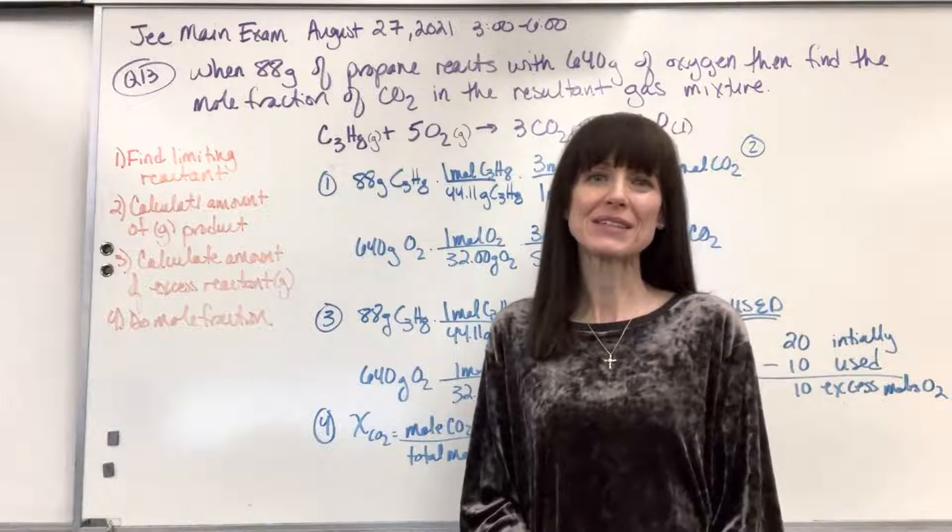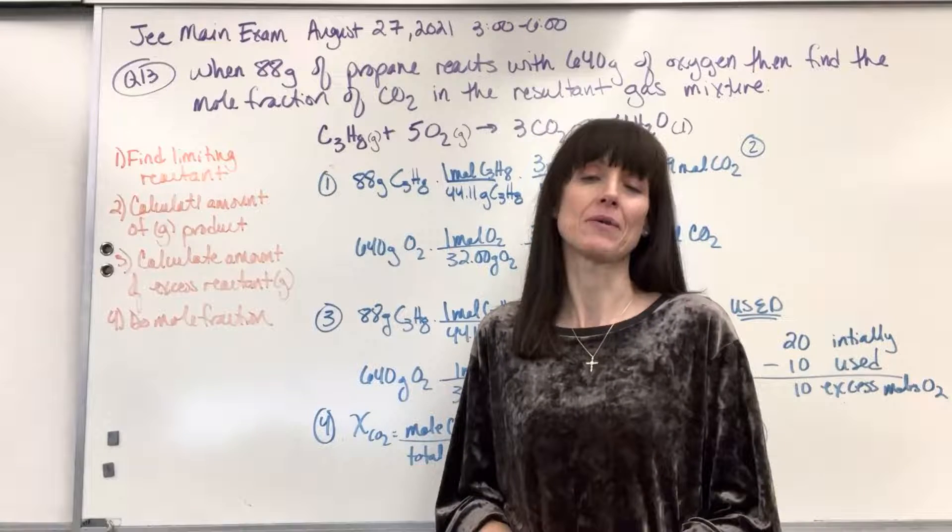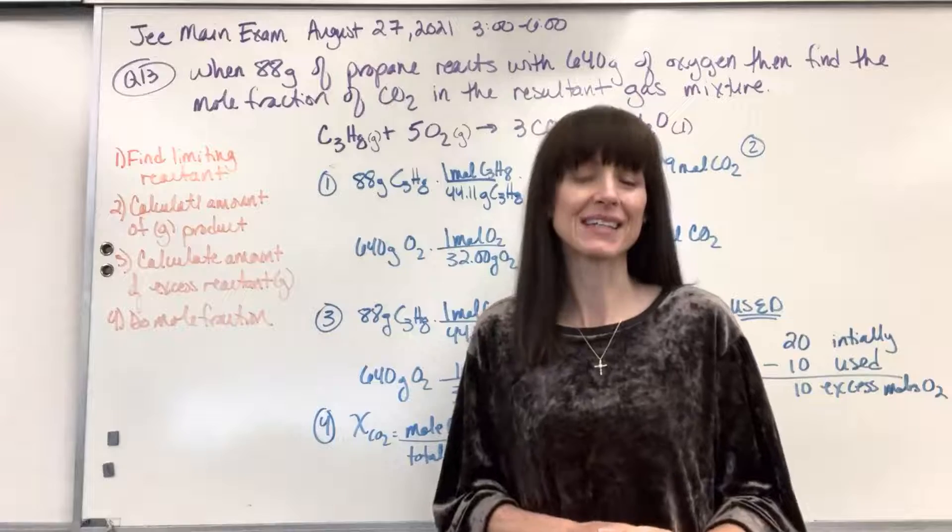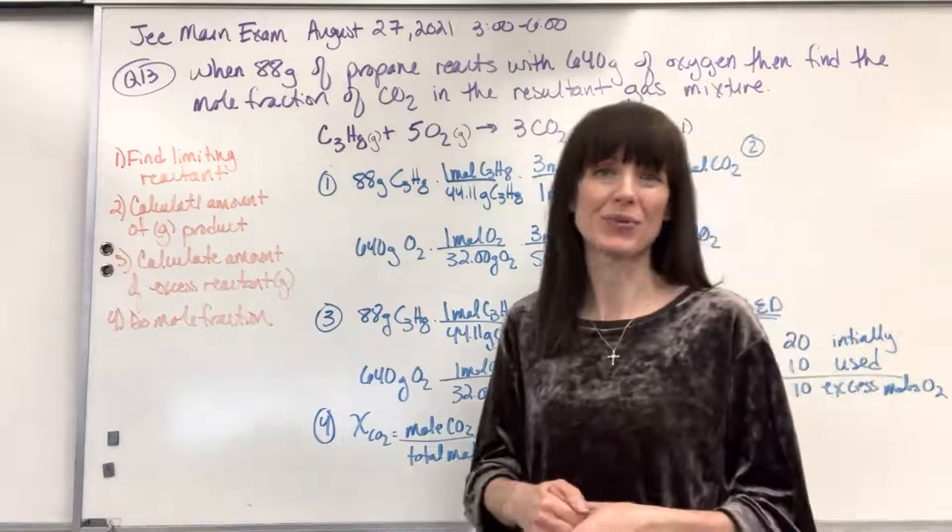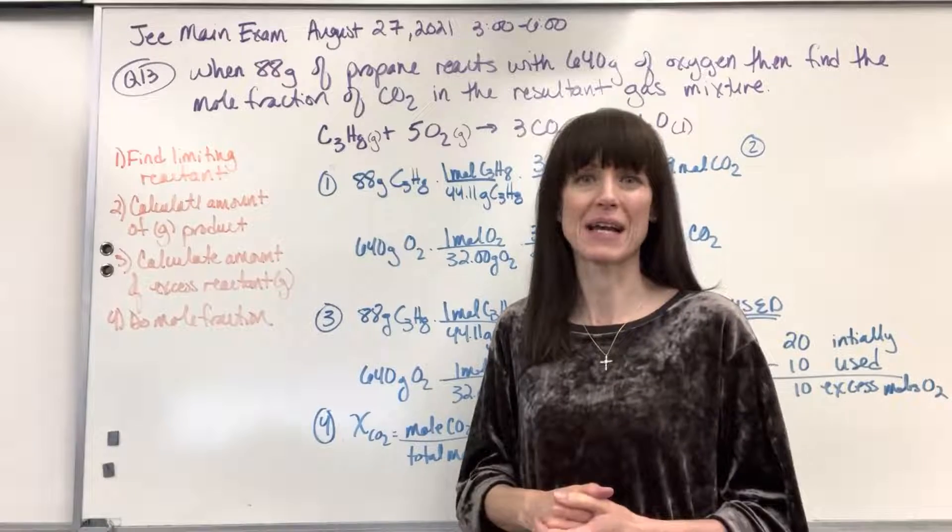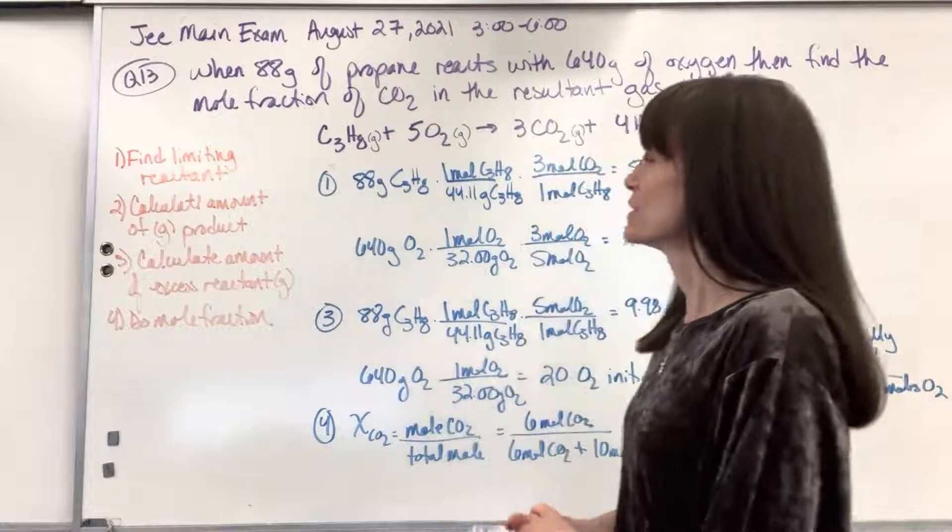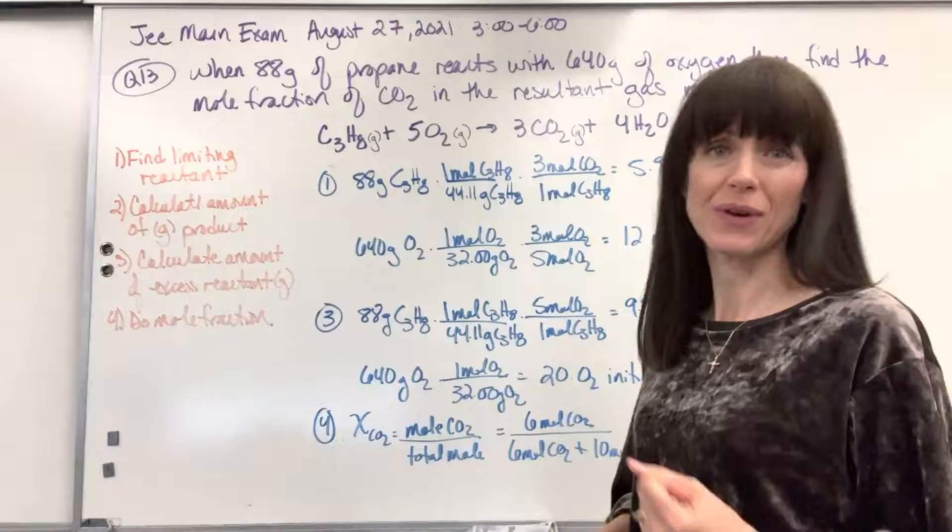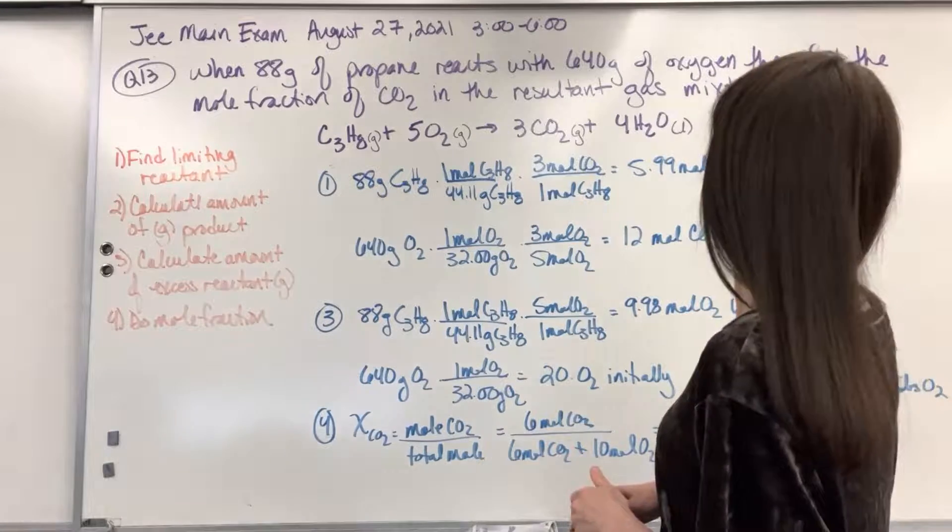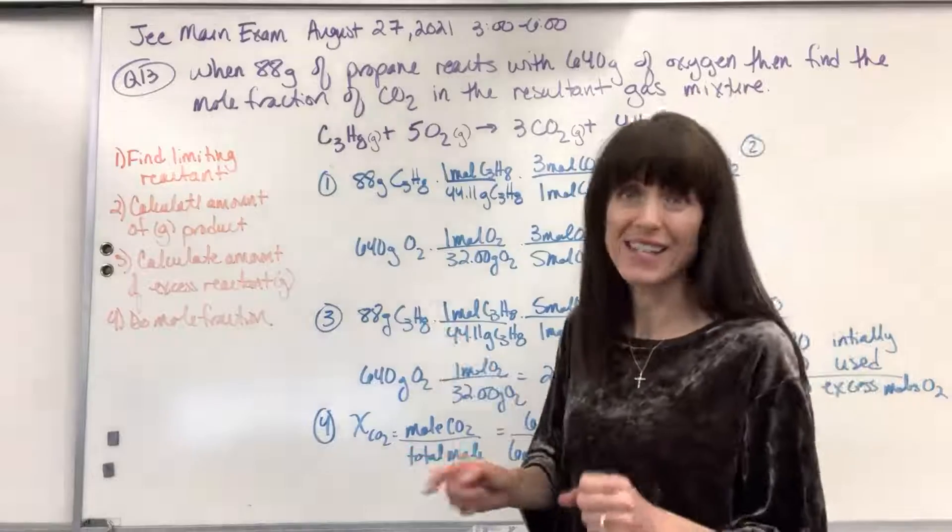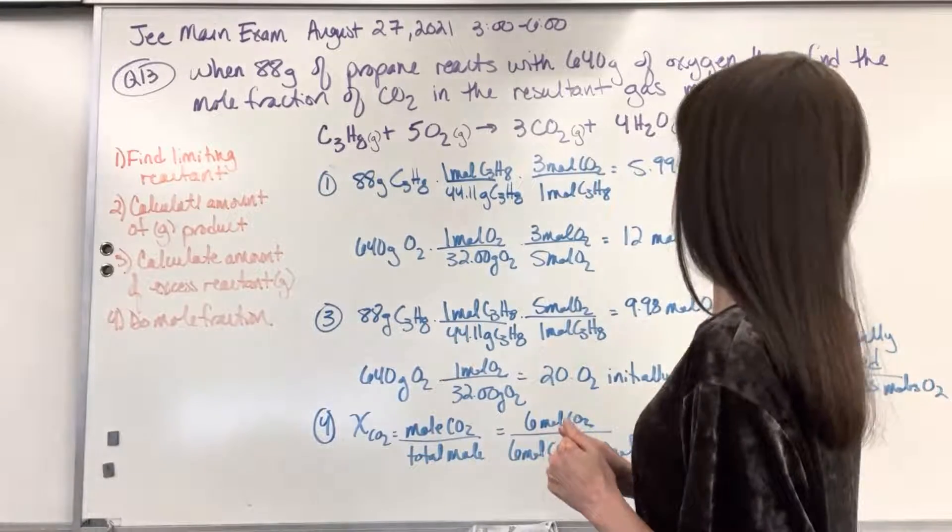Hi everyone! We are going to do another G main exam question. This is limiting reactant and looking at mole fraction. It comes from the August 27, 2021 3 to 6 o'clock exam. Let's read the prompt together. So question 13, it says when 88 grams of propane reacts with 640 grams of oxygen, then find the mole fraction of the CO2, the resultant gas mixture.